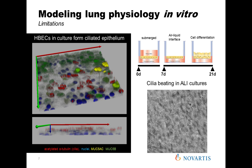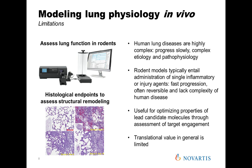A video shows that even under these static conditions, cilia are beating in unison. However, a key challenge with this culture system is that it is relatively low throughput, and you are only dealing with one of the cell types involved in formation of remodeled areas of the lung in disease — so it is a very simplified way of looking at a disease mechanism.